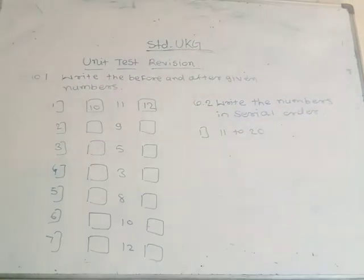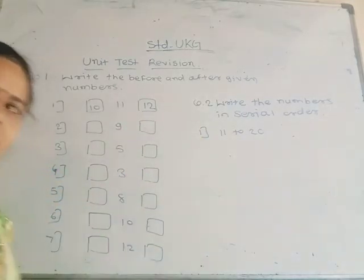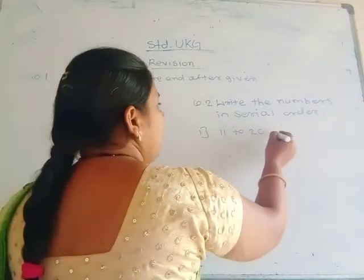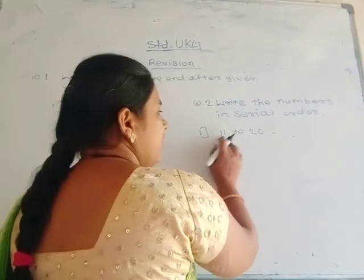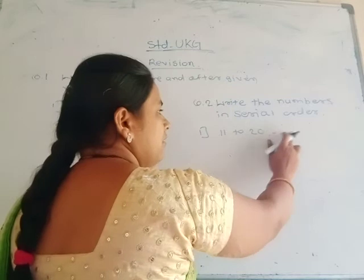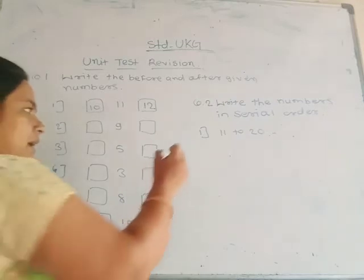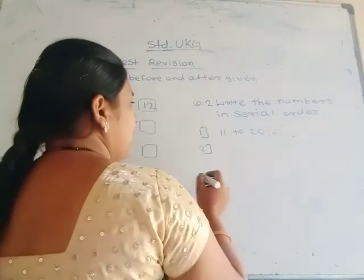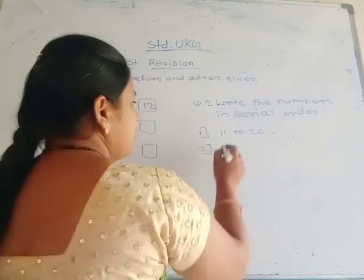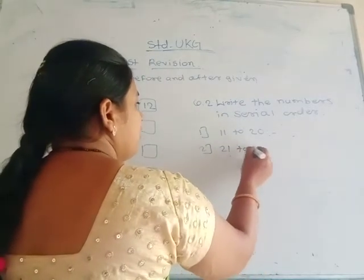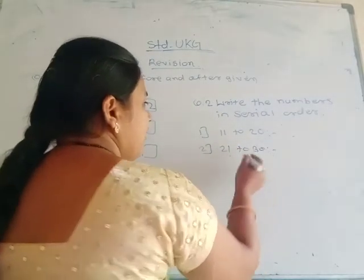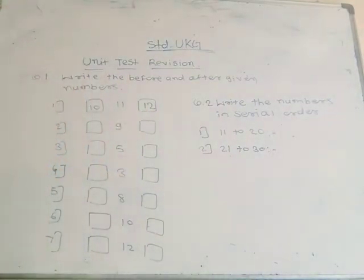Second part of question 2: write the numbers in serial order. This one is 11 to 20: 11, 12, 13, 14, 15, 16, 17, 18, 19, 20. In this type you write all these numbers. Then the second one: 21 to 30. These numbers also you write in serial order.